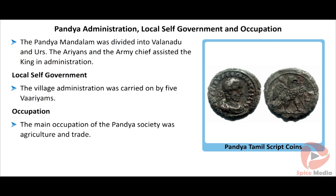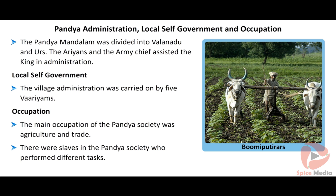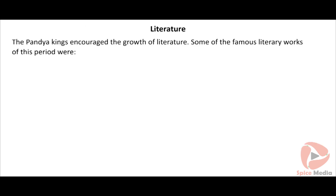The Pandya mandalam or Pandya empire was divided into Valanadu and Urz. The Aryans or ministers and the army chief assisted the king in administration. There were special offices for maintaining accounts and for collection of taxes. The village administration was carried on by five variams: Nidhi Varyam, Varitandal Varyam, Naneya Varyam, Nirnilai Varyam and Arunilaiya Varyam.